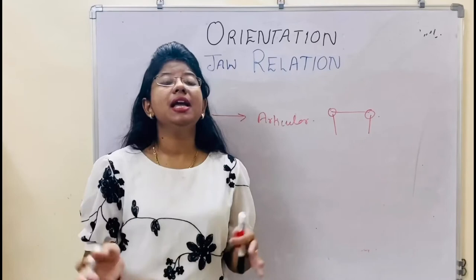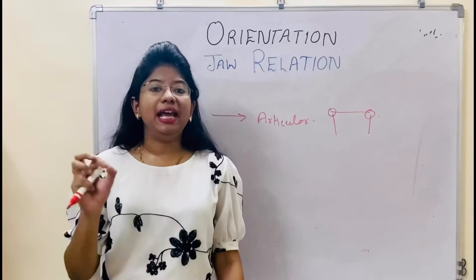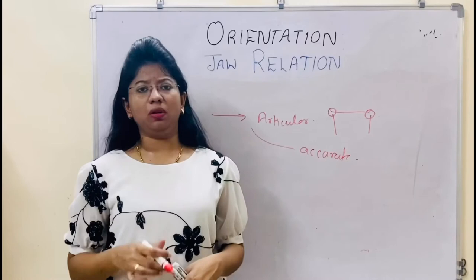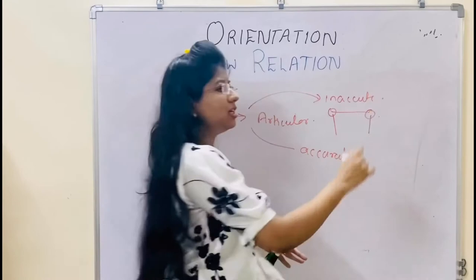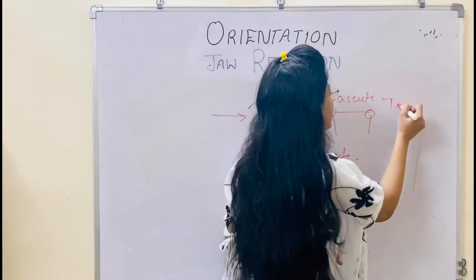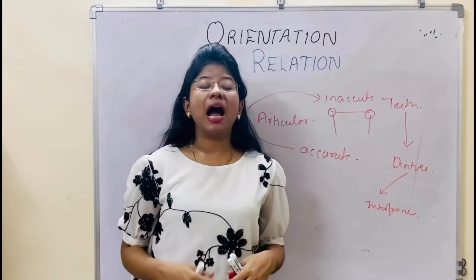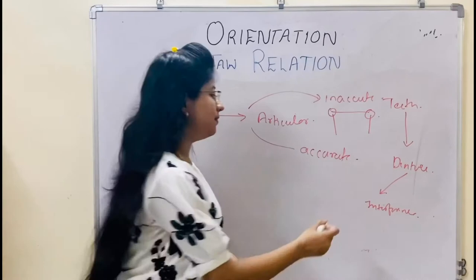So the articulator will replicate the same movements. Why do you need to transfer? If you fabricate a denture, it will fit easily into the patient because the transfer is accurate. But if the transfer is not accurate — if your orientation relation is incorrect — the transfer will be inaccurate. If the transfer is inaccurate, your horizontal relation will also be inaccurate, your teeth arrangement will also be inaccurate, and eventually your denture will show many interferences and deflective high points, which will deflect movement in the patient's mouth and affect the temporomandibular joint.